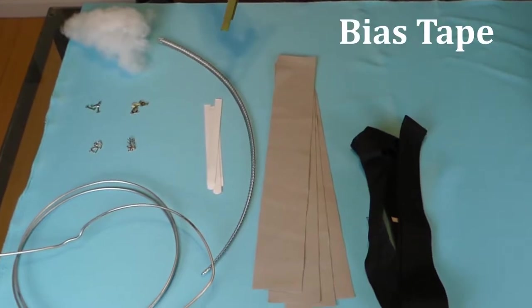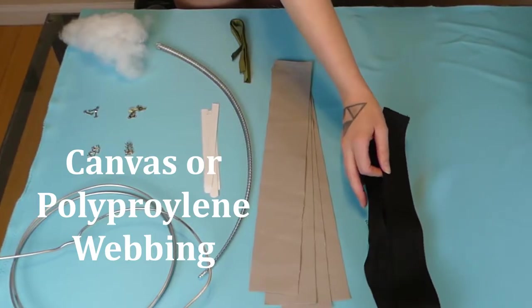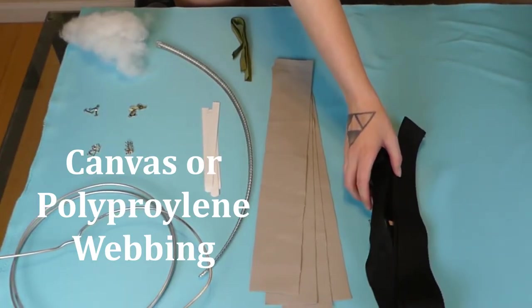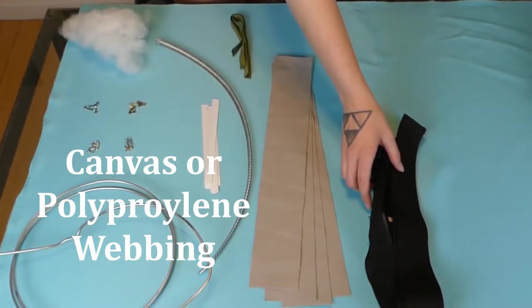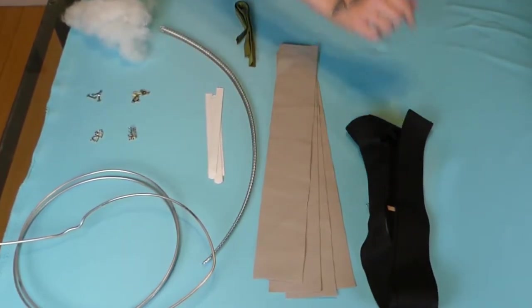You're going to need some bias tape, canvas or that sort of material that you use for shoulder bags, backpacks, anything for a heavy duty strap.